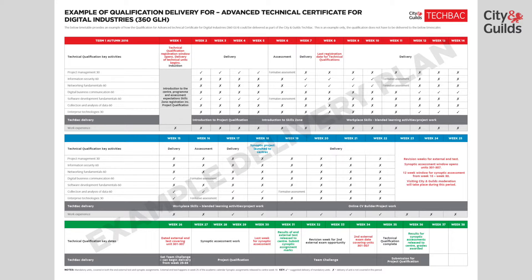In week 12, we have shown digital business communication and enterprise technologies as a possible combination, as these units complement each other, looking at communication as part of a business and the wider aspects of public communication through social media and advertising. The suggested second round of assessment in week 11, combined with the results from week 6, should now be giving you an idea of how to rank your learners on their practical skills.